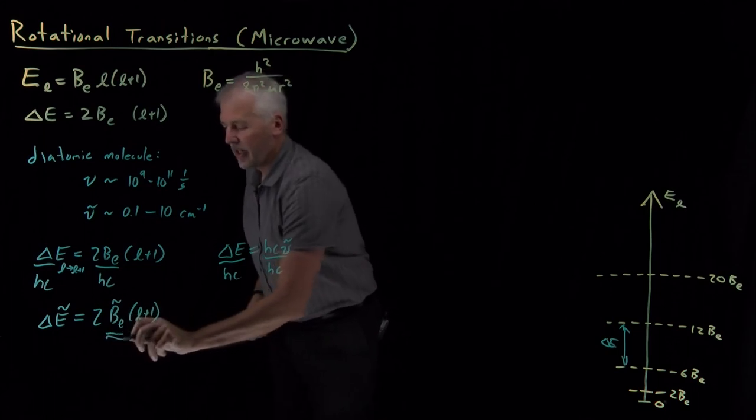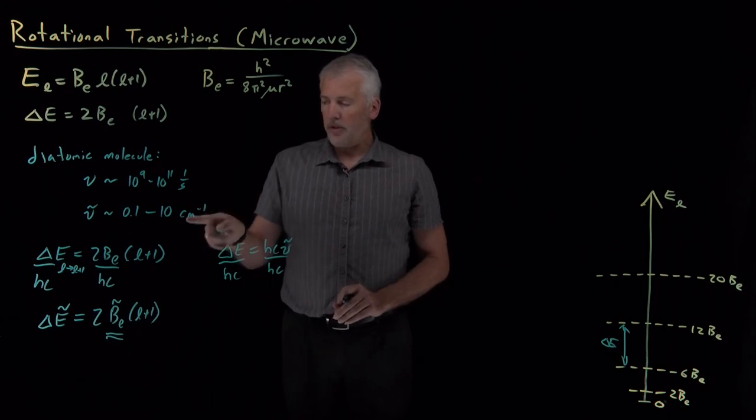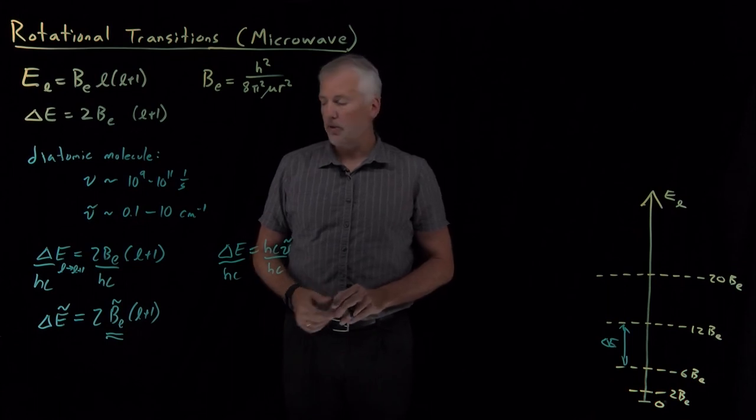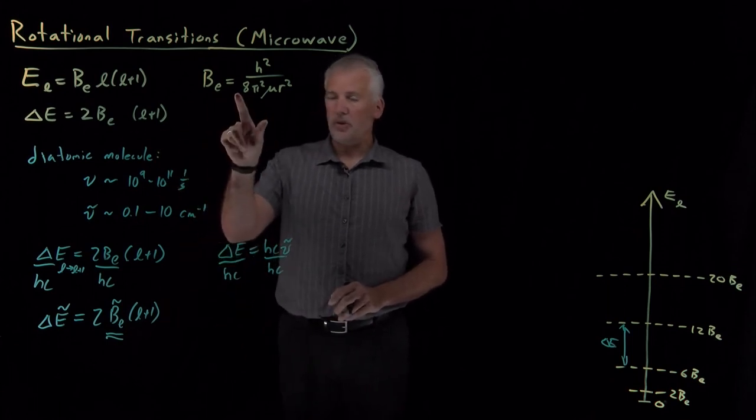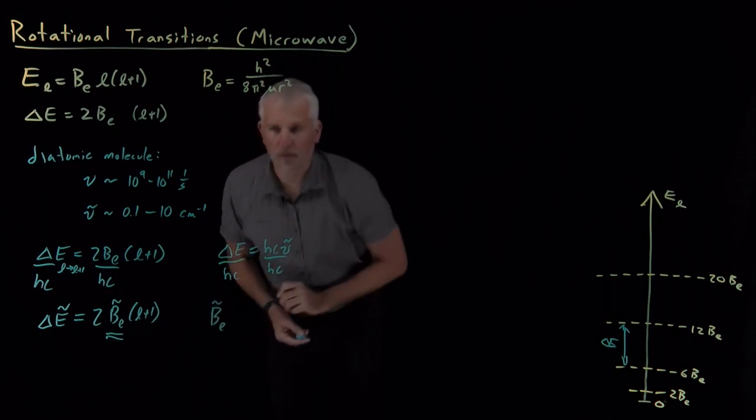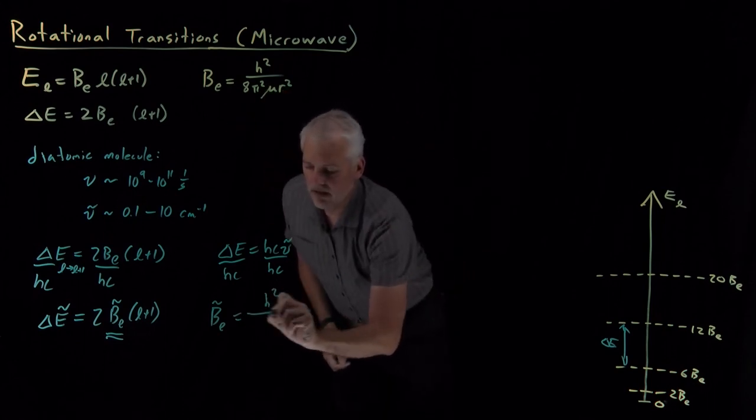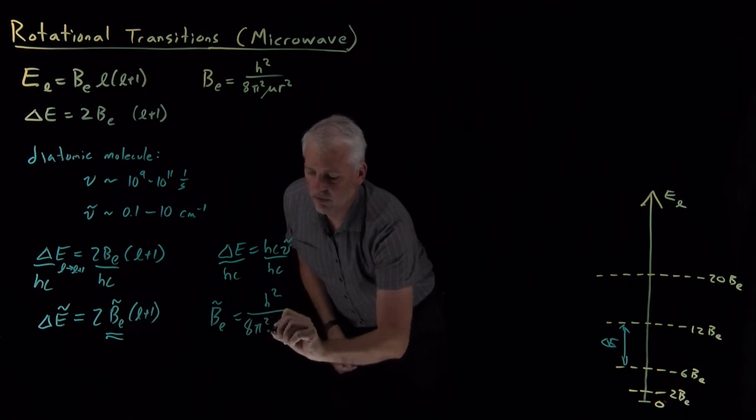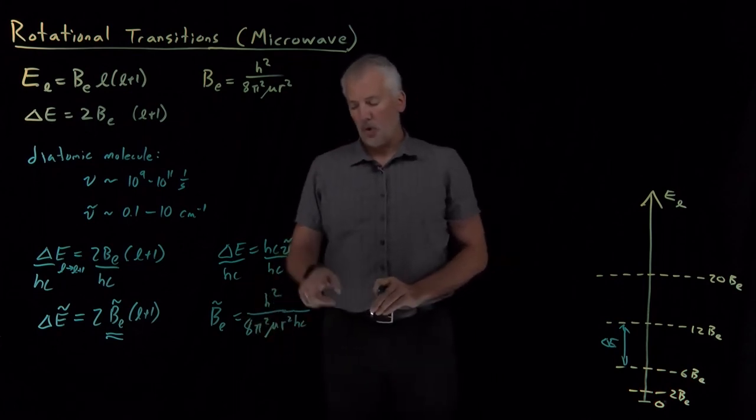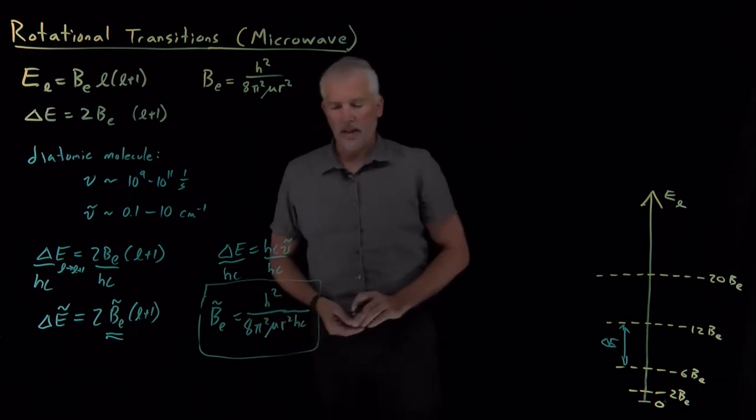That suggests that when we're doing spectroscopy, when we're talking about the wavelength or frequency or wave number of light required to cause transitions between energy levels for rotating diatomic molecule, we're not so much interested in the rotational constant as we are in the rotational constant with units of wave numbers. So just take the rotational constant, divide it by HC. So h squared over 8 pi squared mu r squared with an extra HC in the denominator, so an even more complicated collection of constants is what our rotational constant is when we want it in units of wave numbers.